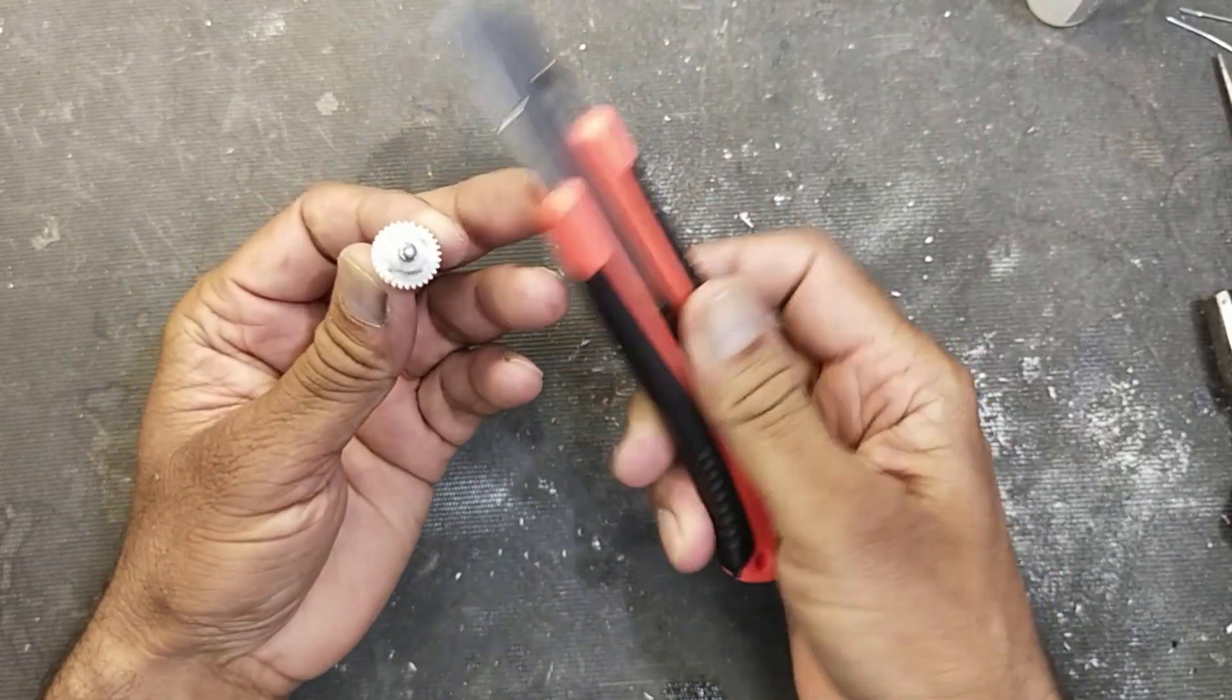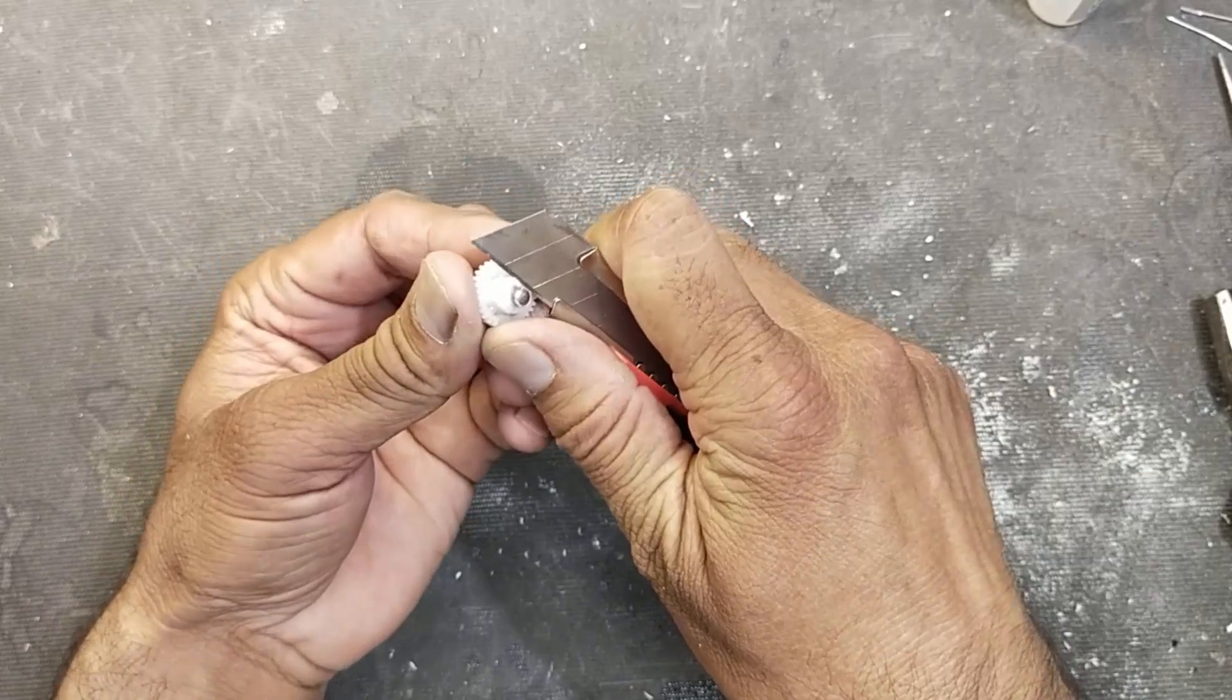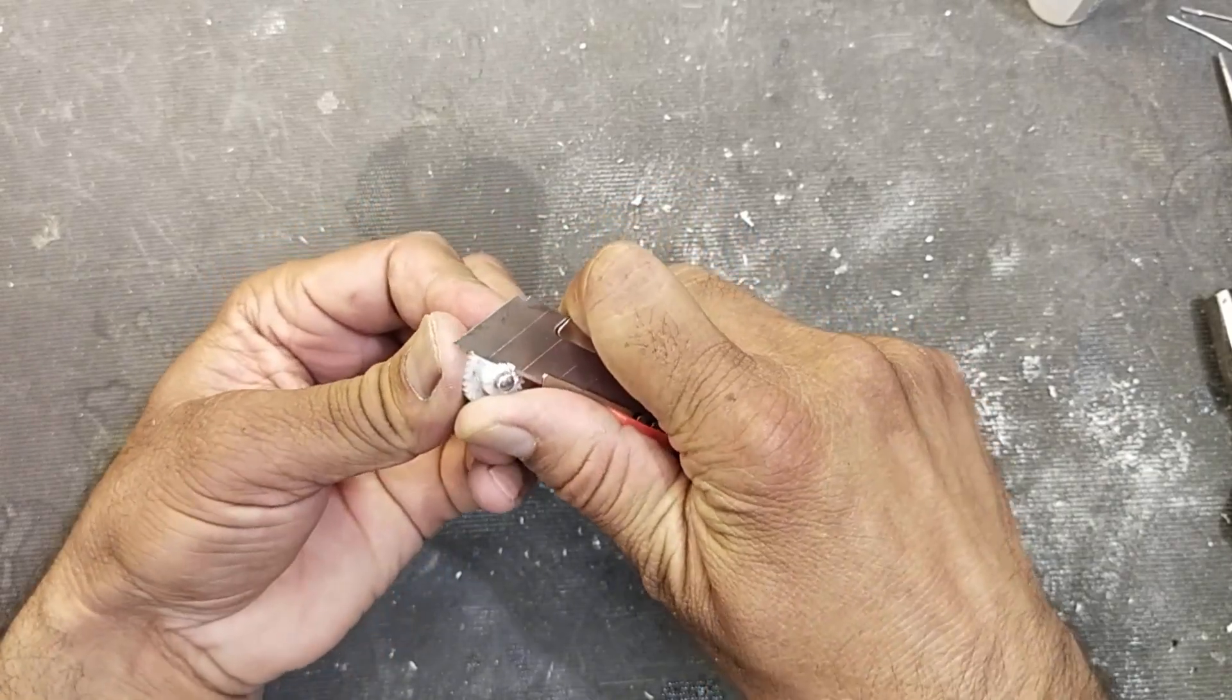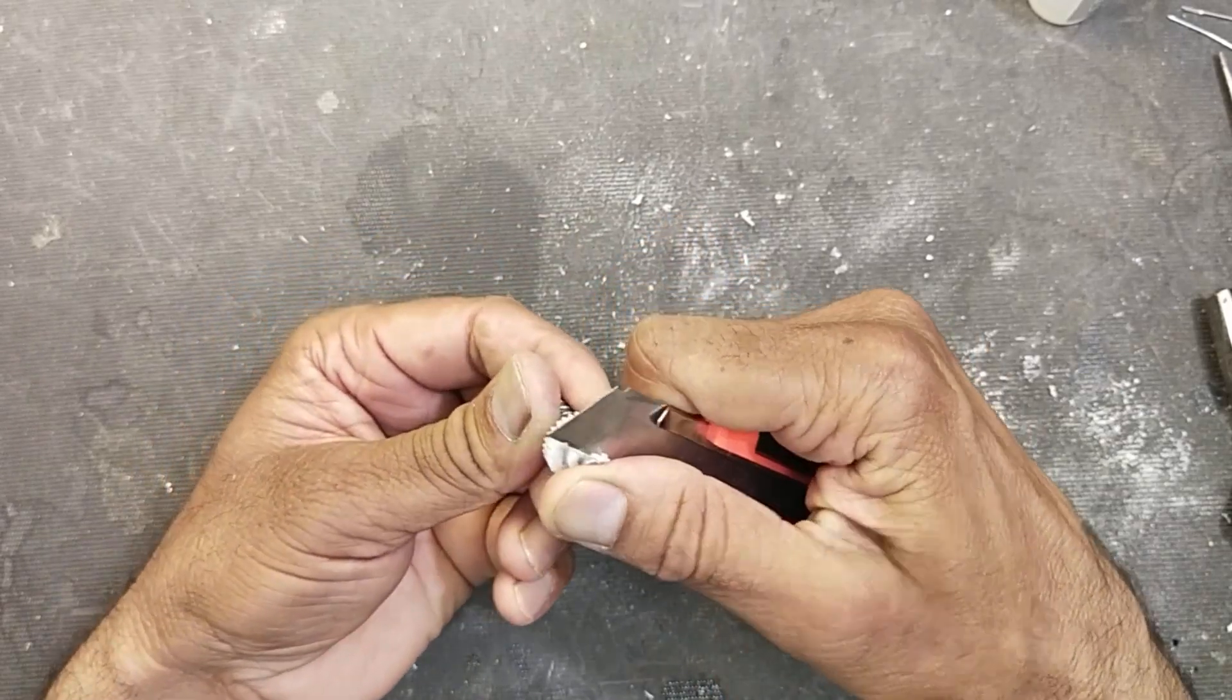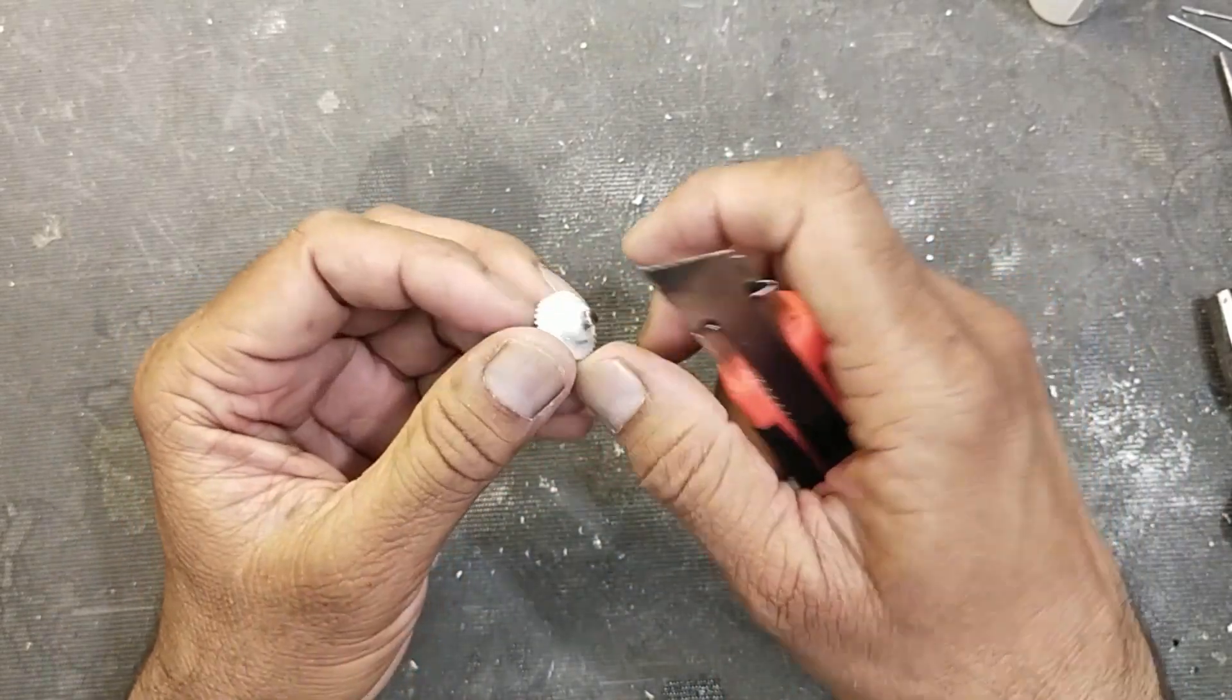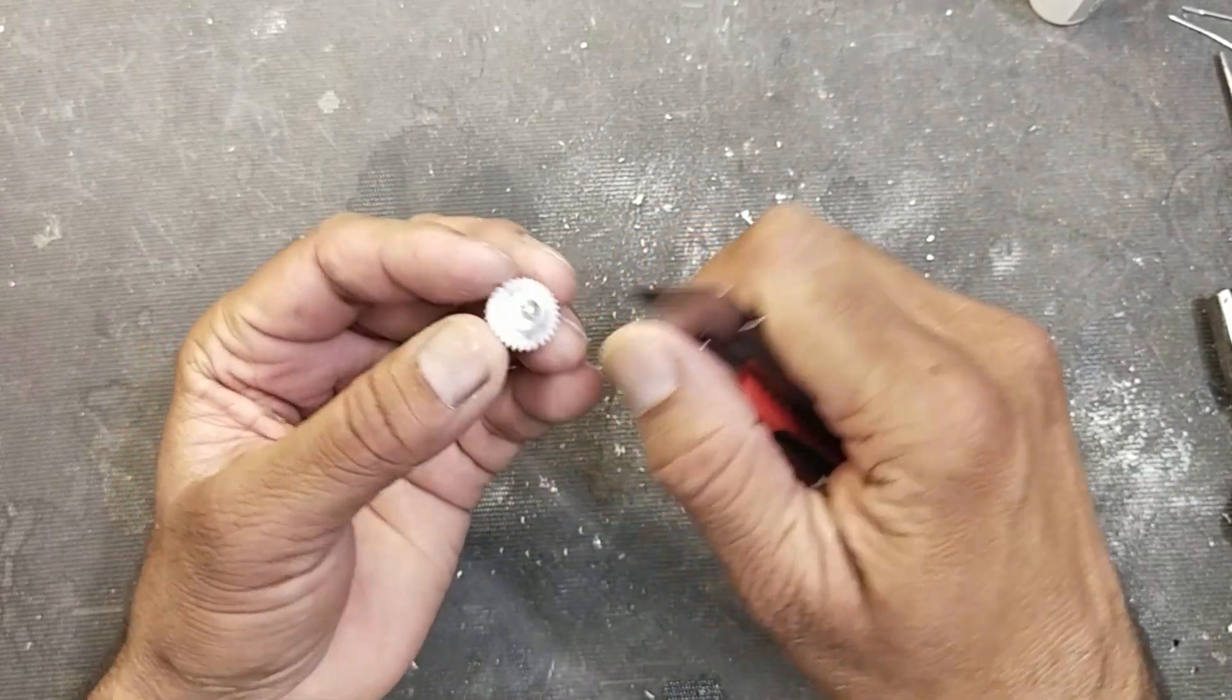Now using a knife, I will remove all the extra amount from the gear. So we must have free movement of the gear and there must be spare headroom for the shaft.